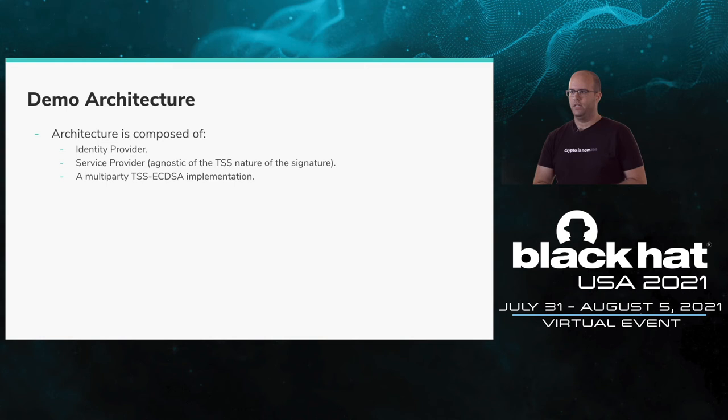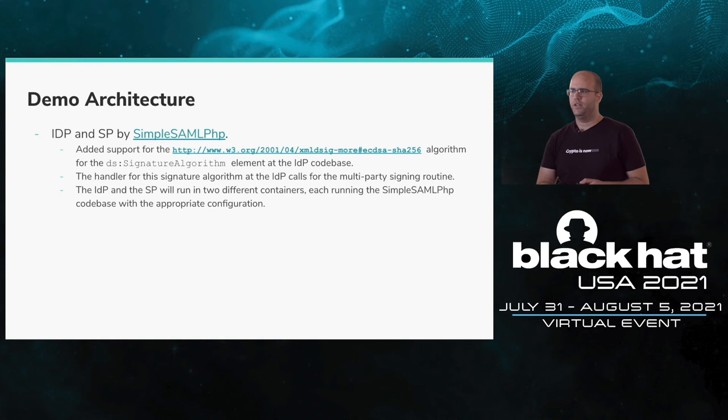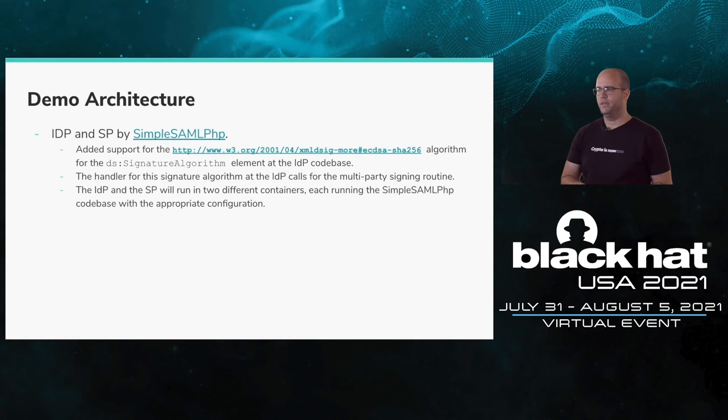The first two parts — the IDP and SP — were taken from the SimpleSAMLphp project, which implements the SAML protocol in PHP. What we contributed to its codebase was supporting the EC-DSA SHA-256 algorithm as the signature algorithm XML element in the IDP codebase. The handler for this signature algorithm at the IDP calls the multi-party signing routine when generating a signature for the assertion.